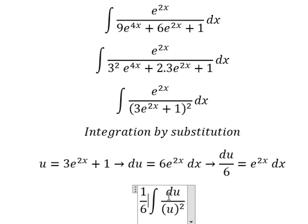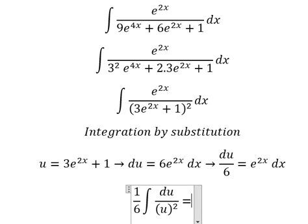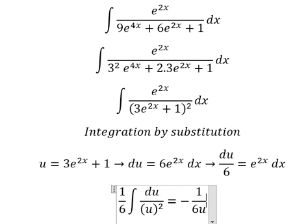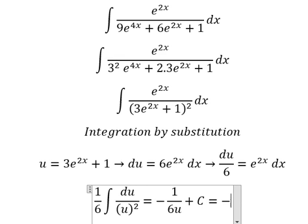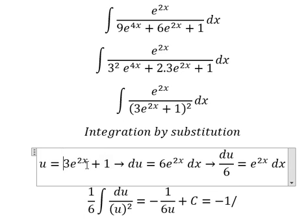The integration of this one we have negative one over 6u and we put c. For u, that is about this one.